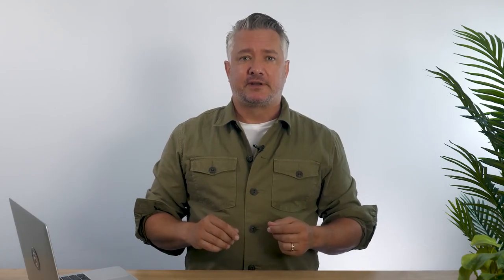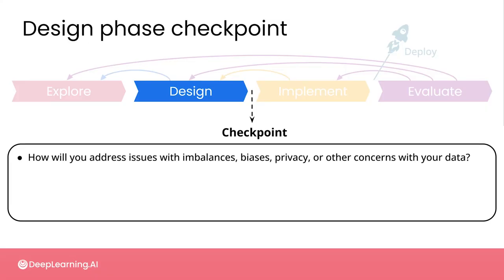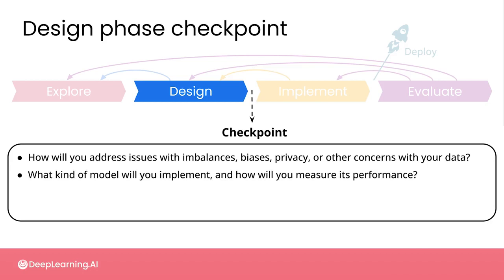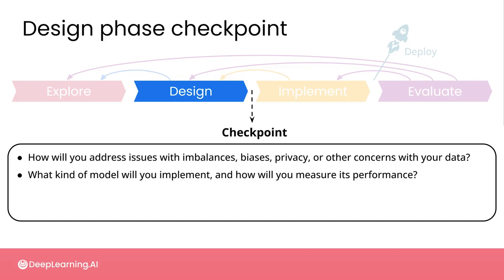Once you've completed the design phase, there is another set of questions you should answer with your team before moving on to the next phase of development. First, regarding the data: how will you address the issues of imbalances, biases, privacy, or other concerns with your data? Secondly, what kind of model will you implement and how will you measure its performance? Then, how will your design successfully address the problem that you defined in your explore phase? And finally, how will end users interact with your system?